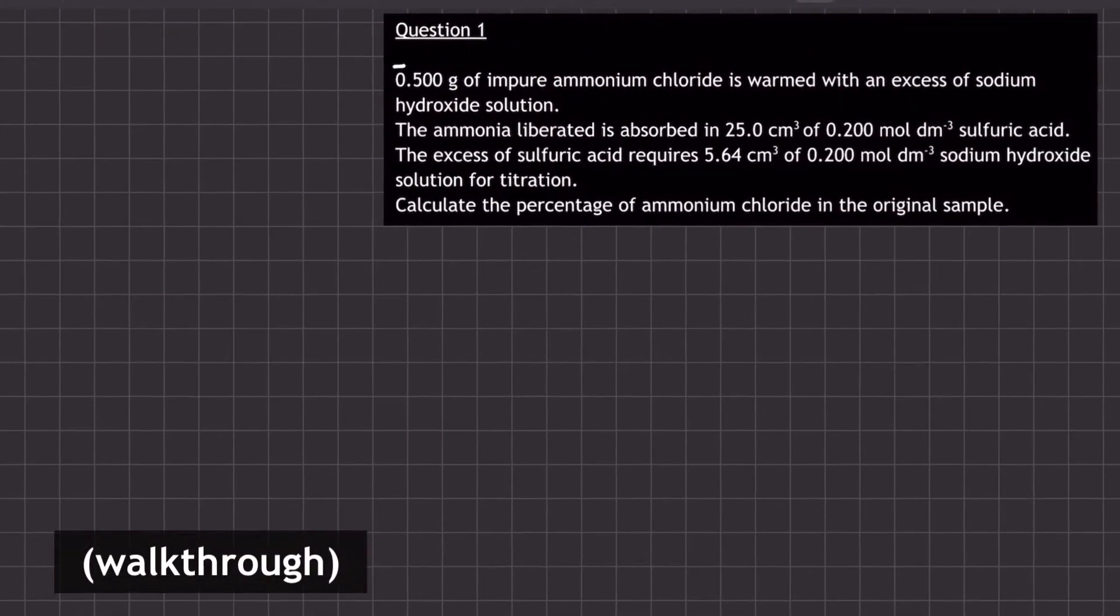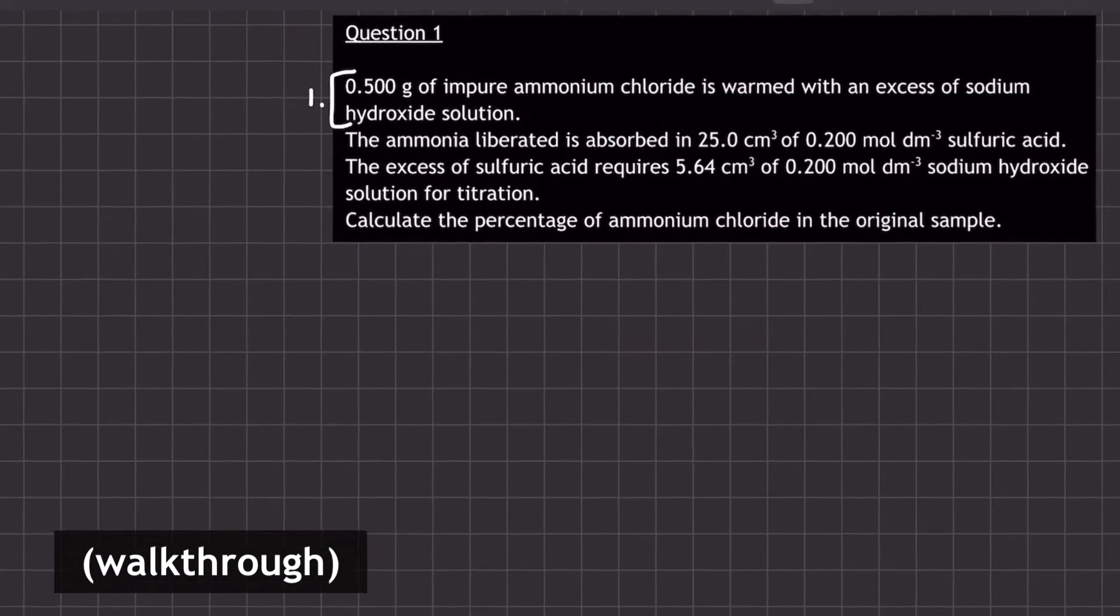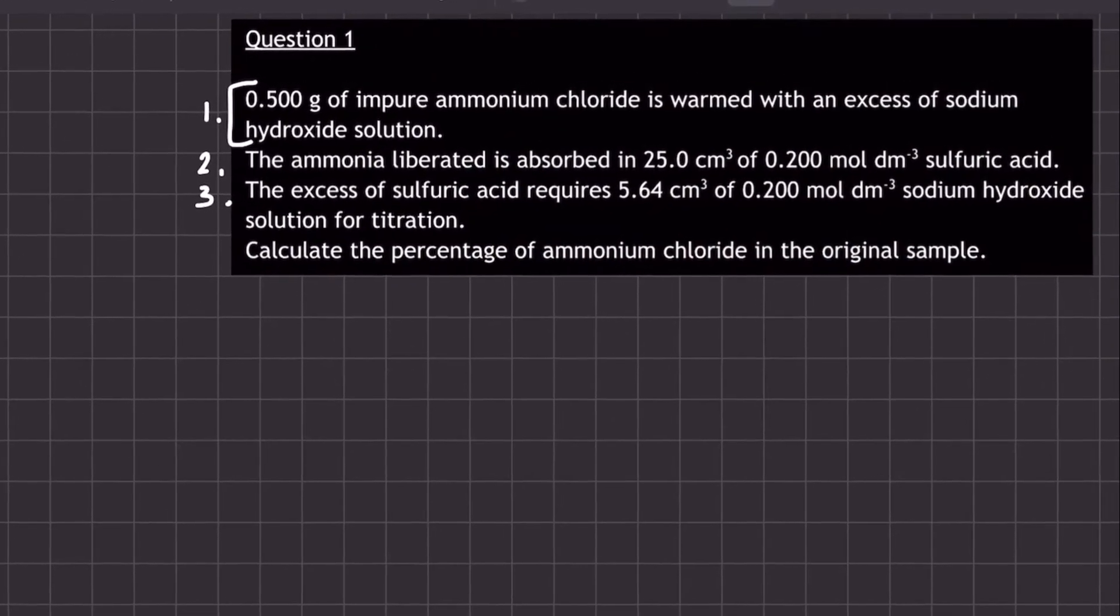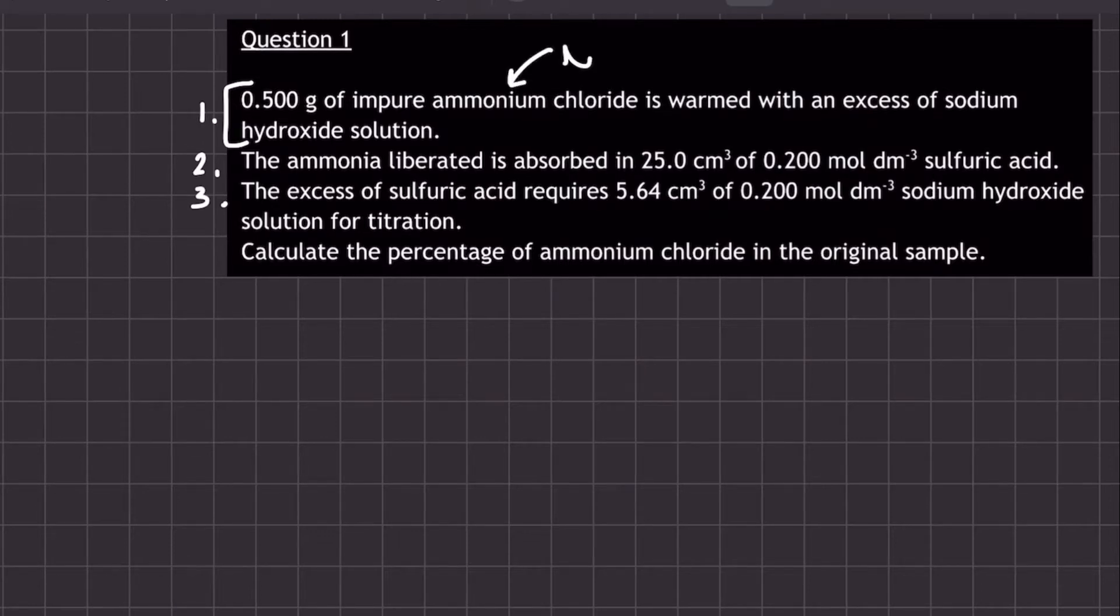This is a particularly complicated exam question because the whole scenario is split across three stages. In the first stage, a 0.5 gram impure ammonium chloride sample is warmed with an excess of sodium hydroxide solution.